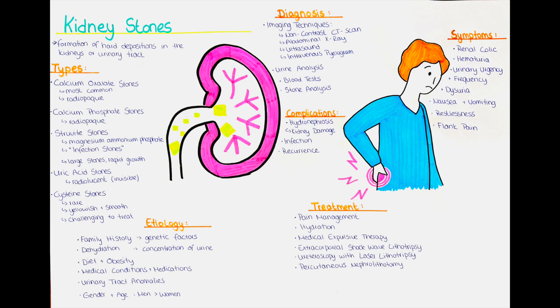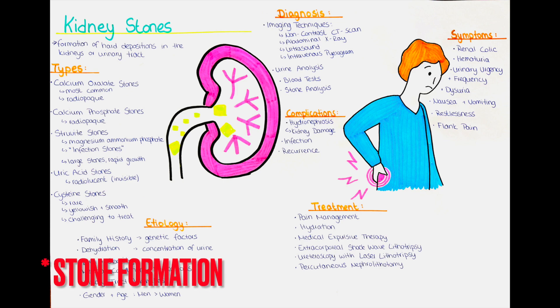Certain dietary factors can contribute to the formation of kidney stones. Examples are high intake of oxalate-rich foods such as spinach, rhubarb, beets and nuts. Oxalate can bind with calcium in the urine, leading to calcium oxalate stone formation. Being overweight or obese can also increase the risk of developing kidney stones. Obesity is associated with metabolic changes that can promote stone formation.